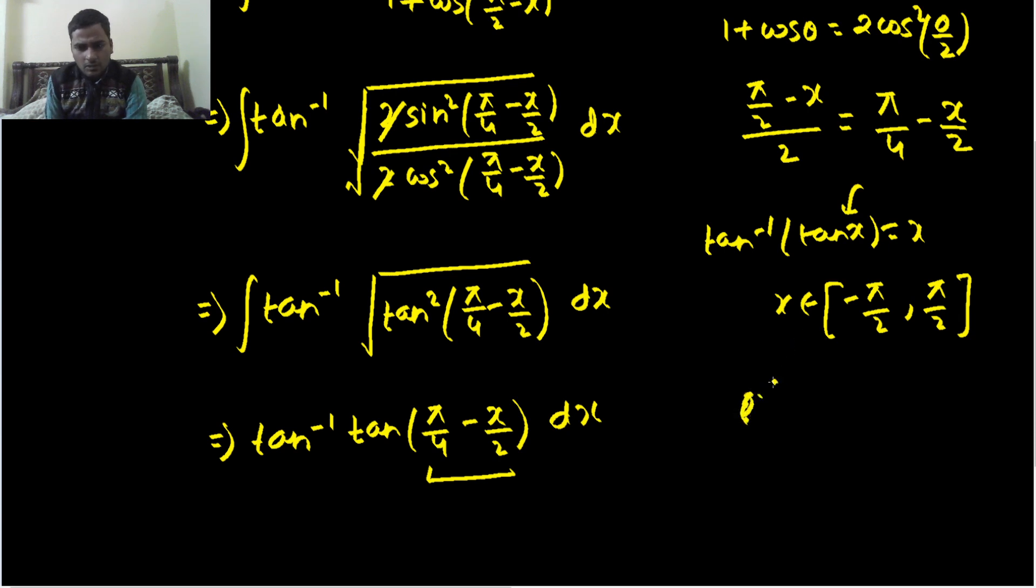Because they have already mentioned that x is in this interval for this question. Now x/2 will be in this interval. So if I talk about π/4 - x/2, the least value it can take is when x/2 value is -π/4. Then it will take the value of 0. So this bracket value is lying between 0 and when this is -π/4, minus minus plus, so π/2.